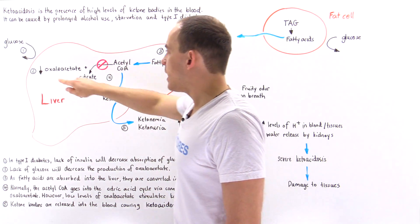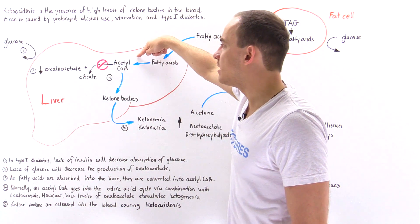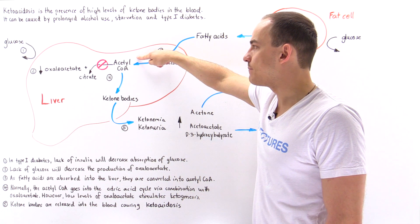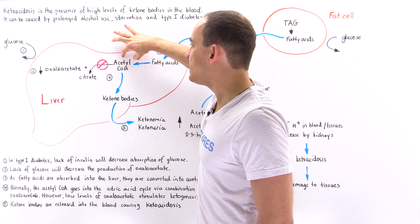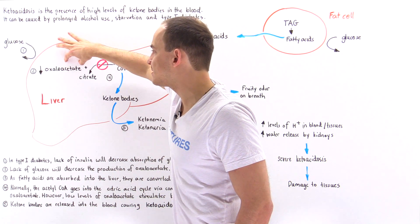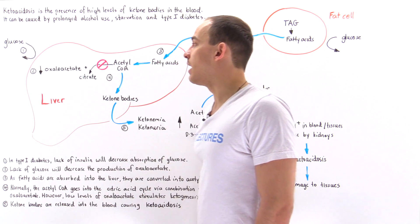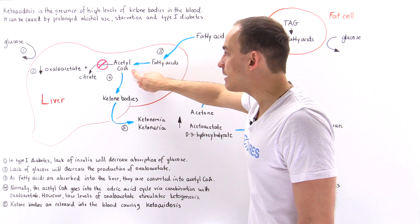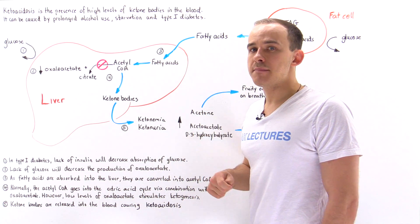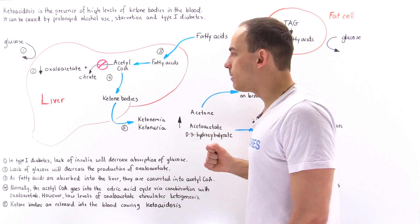So we have low levels of oxaloacetate in liver cells and high levels of acetyl coenzyme A. And so this process by which we essentially feed the acetyl coenzyme A into the citric acid cycle will be blocked as a result of the low levels of oxaloacetate. So the only pathway that is left for these acetyl coenzyme A molecules is ketogenesis, the production of ketone bodies.